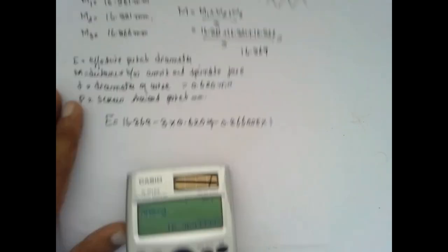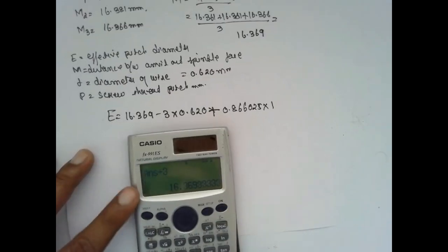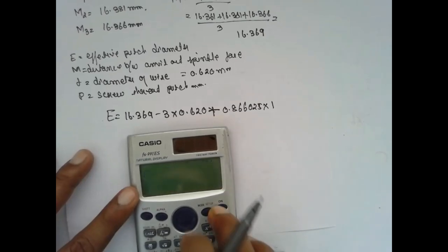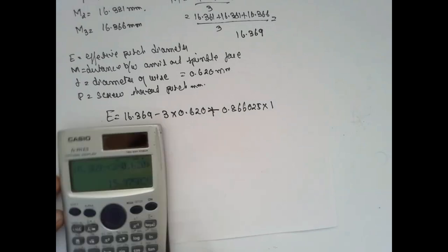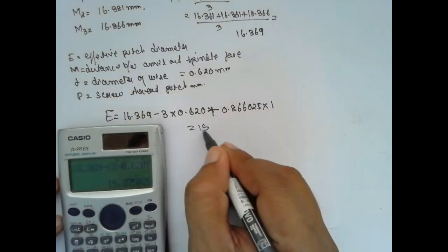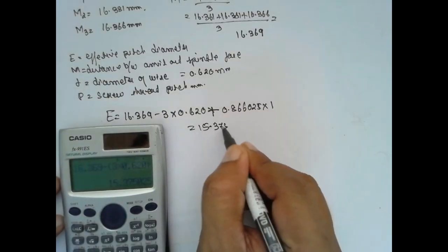If you calculate, you will obtain the effective diameter. The effective diameter E is equal to 15.375 mm.